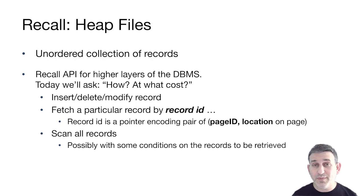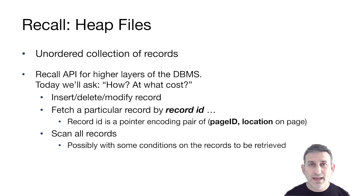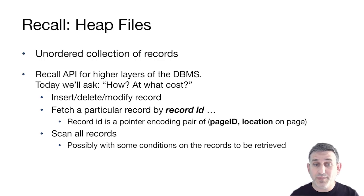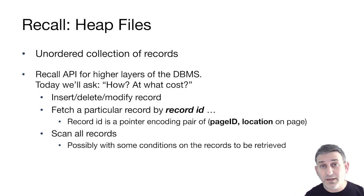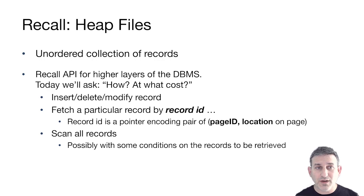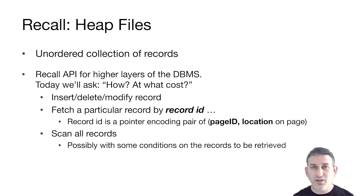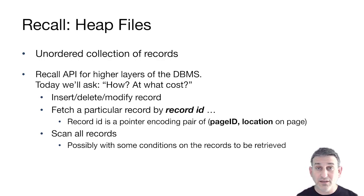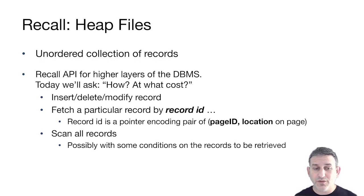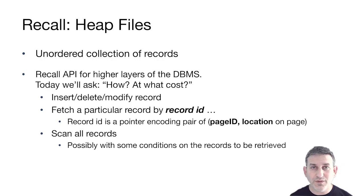Recall we talked last time about heap files and how they are stored. A heap file is an unordered collection of records. You may remember the API for any of these higher layers of the DBMS. Today for this API we will be asking how does it work and at what cost. The basic APIs for heap files were to insert, delete, or modify records; to fetch a particular record by record ID — which is a page ID and a location of some kind; and to scan all the records on a particular file, possibly with some conditions on the records to be retrieved.